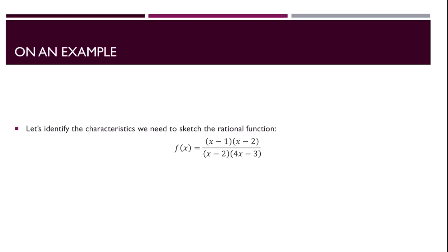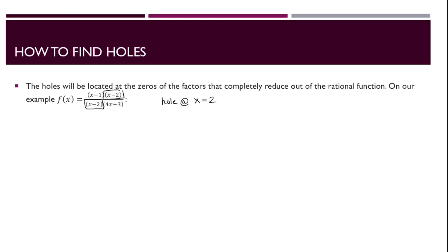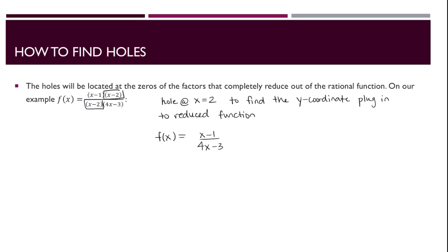For an example, let's identify the characteristics needed to sketch the rational function f of x equals x minus 1 times x minus 2 in the numerator, and x minus 2 times 4x minus 3 in the denominator. Because this is already factored, we'll find the holes first. Noticing the repeated factor x minus 2, we have a hole at x equals 2. To find the y-coordinate, we plug x equals 2 into the reduced function f of x equals x minus 1 over 4x minus 3, giving us 2 minus 1 over 4 times 2 minus 3, which equals 1 over 5. So we have our hole at (2, 1/5).